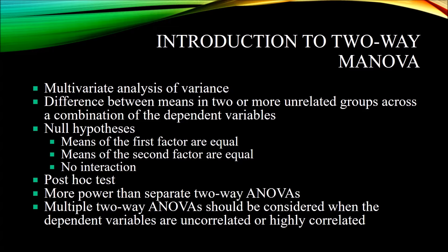That gives us three null hypotheses. Using an example: let's say you had a group of participants and wanted to look at differences across two independent variables — gender (with two levels: male and female) and treatment (with three levels: CBT, existential therapy, and psychodynamic therapy) — on two dependent variables: an instrument designed to measure depression and an instrument designed to measure anxiety.